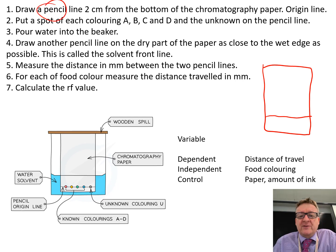Put a spot of each coloring A, B, C, D and the unknown on the pencil line. That's done with capillary tubes. It's a really thin piece of glass—you dip it into your food coloring and put a little tiny spot on there.